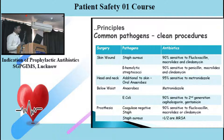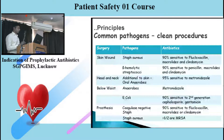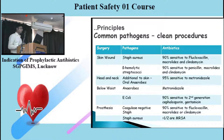Anaerobes and E. coli in below-waist surgeries are mostly sensitive to metronidazole and second-generation cephalosporins or gentamicin respectively. In cases of prosthesis, coagulase-negative staphylococci and Staph aureus are common pathogens — 90% of coagulase-negative bacteria are sensitive to ampicillin, clindamycin, and macrolides. However, in prosthesis cases, half of the Staph aureus colonizing those prostheses are now methicillin-resistant and require higher antibiotics.